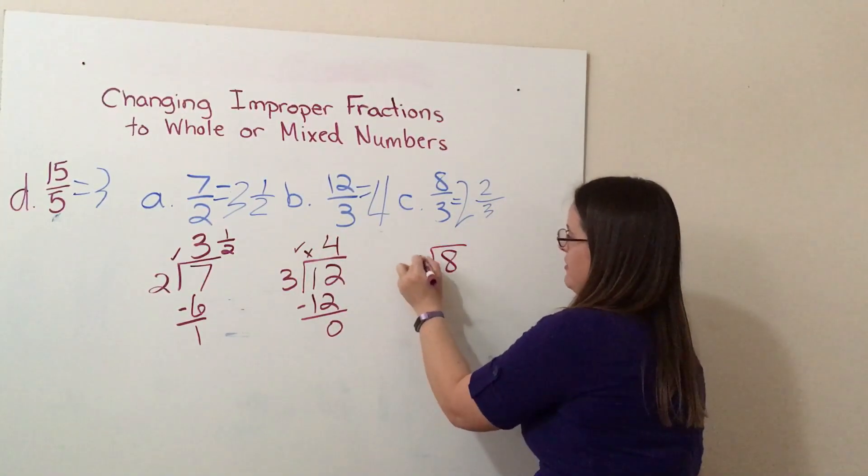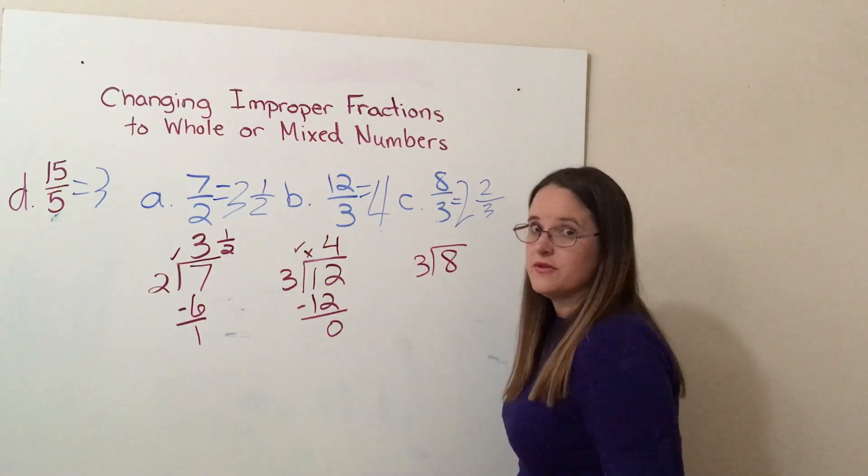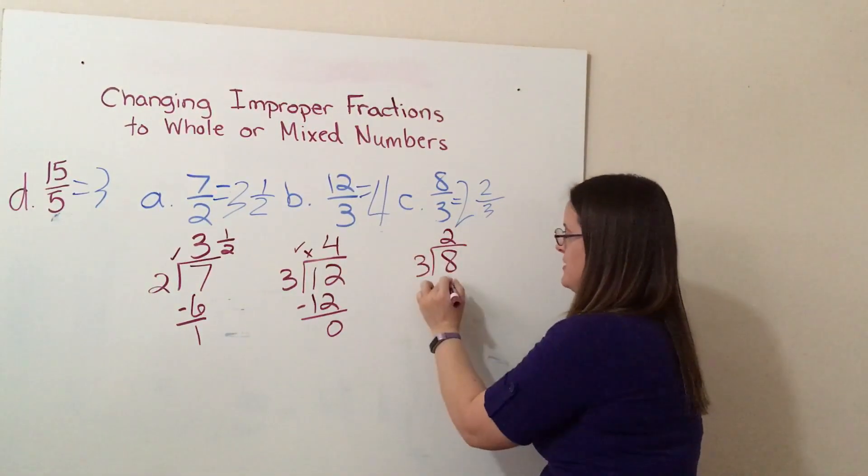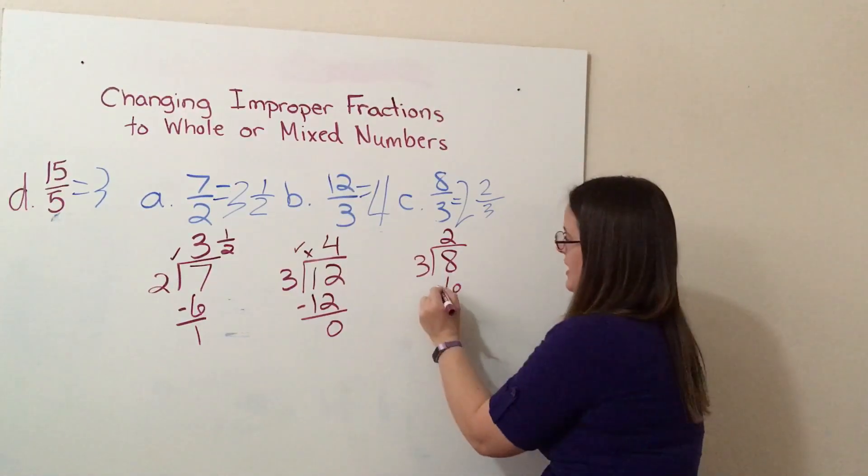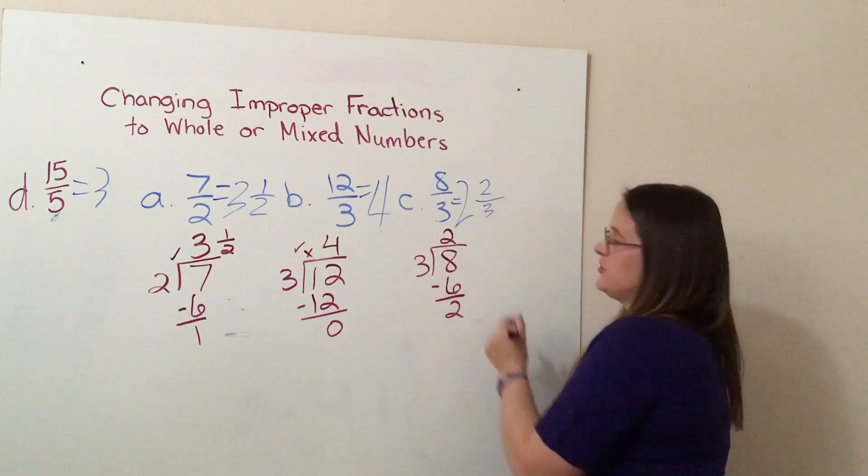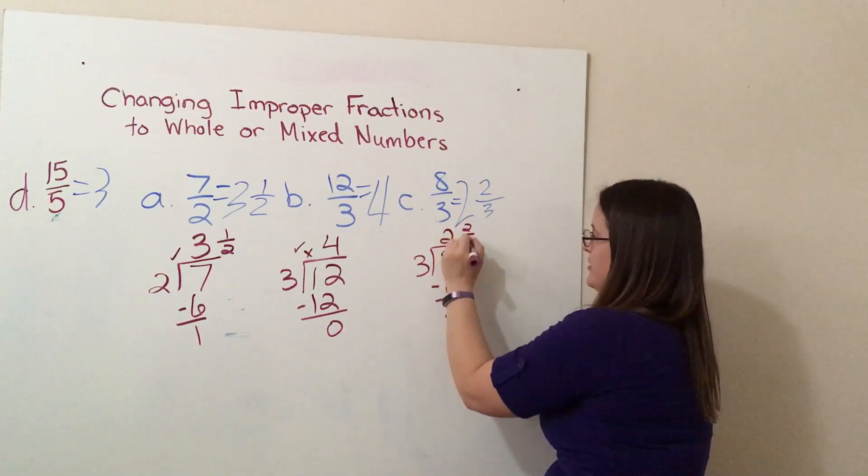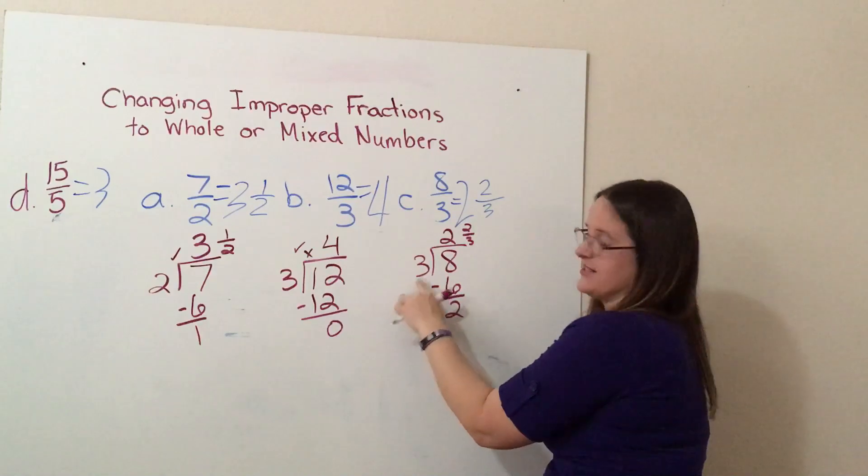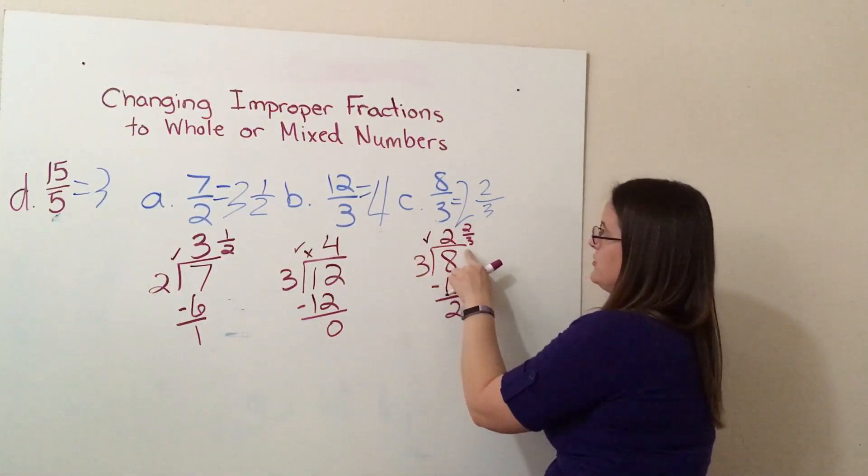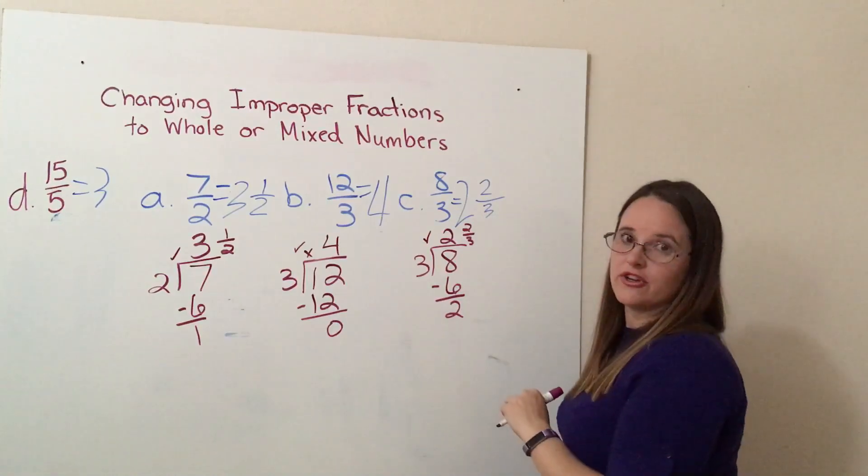Eight divided by three. Three goes into eight two times, two times three is six. We subtract, we get a remainder of two, which we then turn into our fraction, the numerator of our fraction, and our divisor becomes the denominator of our fraction. So, two and two thirds, two and two thirds, check.